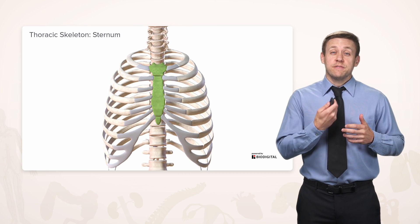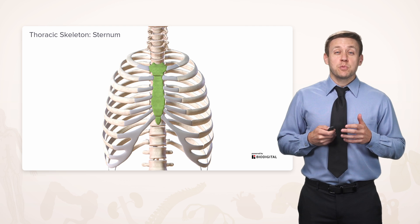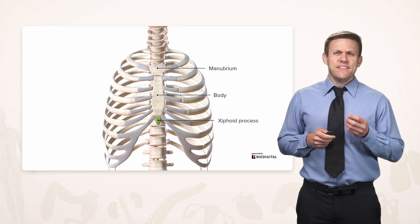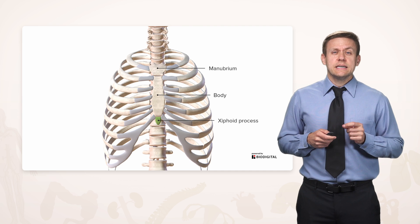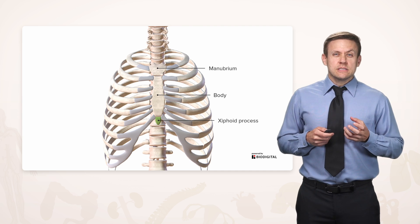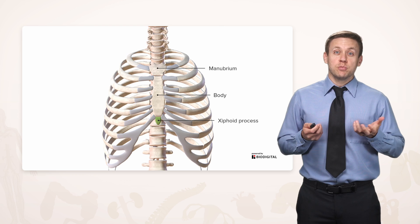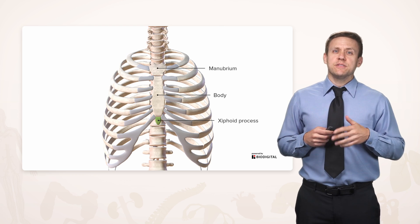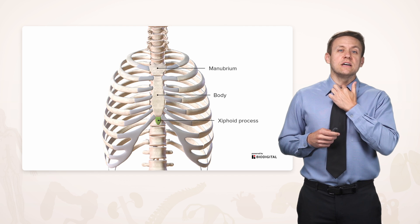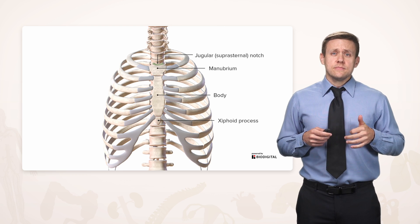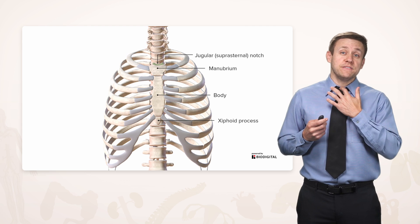The sternum is the bone found right along the anterior midline, broken up into three parts: the manubrium, the body, and at the inferior edge, the xiphoid process or xiphisternal. That xiphoid process looks a little pointy — long ago, when people used swords, it looked to them like the sternum was an upside-down sword. In fact, xiphoid means sword-like and manubrium means handle. The manubrium also has a little divot along its superior edge called the jugular or suprasternal notch, a landmark that's usually pretty easily palpated during a physical exam.